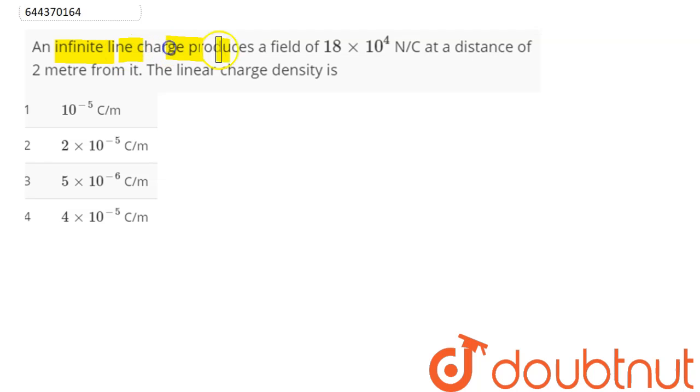Question is, an infinite line charge produces a field of 18 into 10 power 4 newton per coulomb at a distance of 2 meters from it. The linear charge density is.